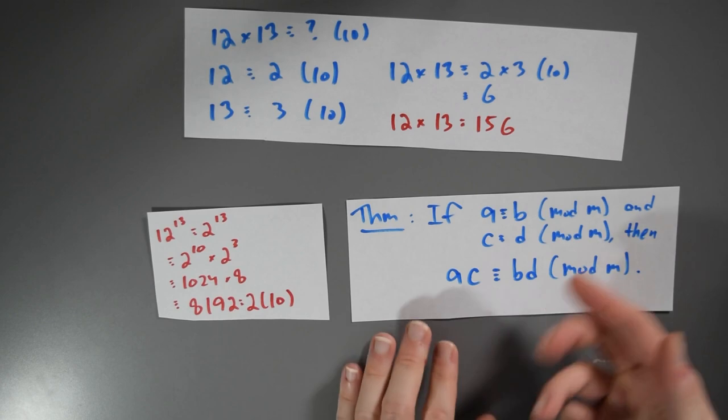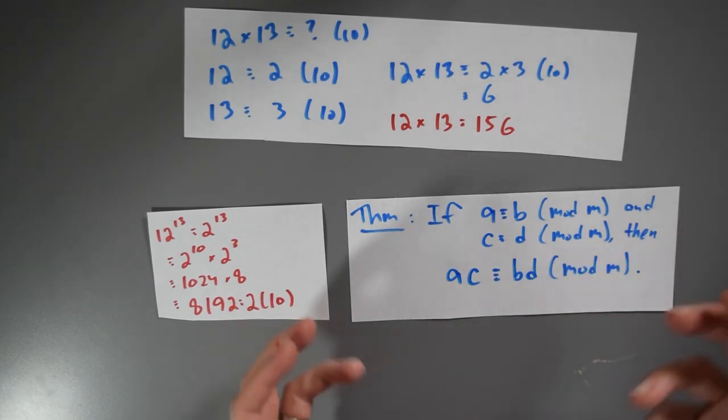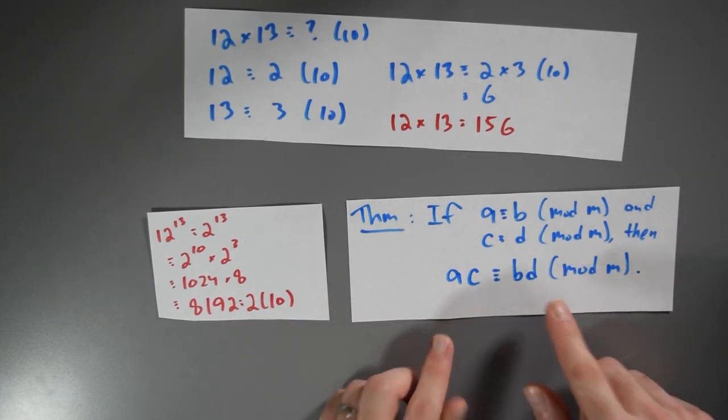Why is this such an important theorem? Well, it's a theorem that's telling us that we can replace equivalent things for equivalent things and get an equivalent answer, as long as we're doing multiplication.